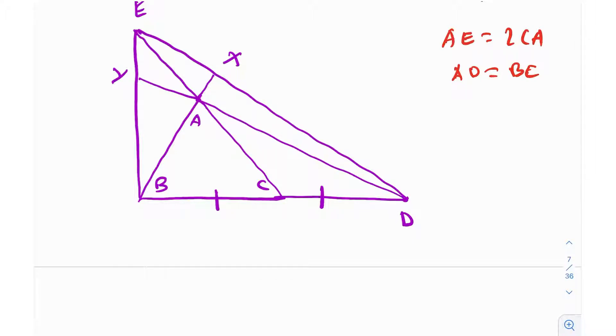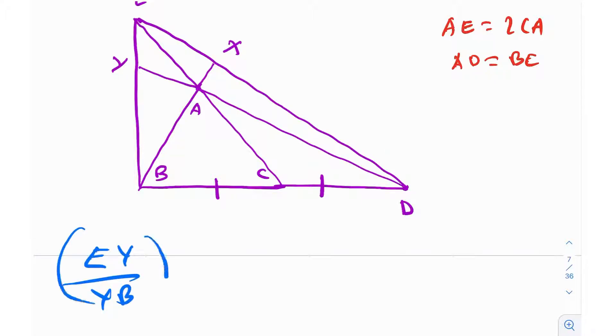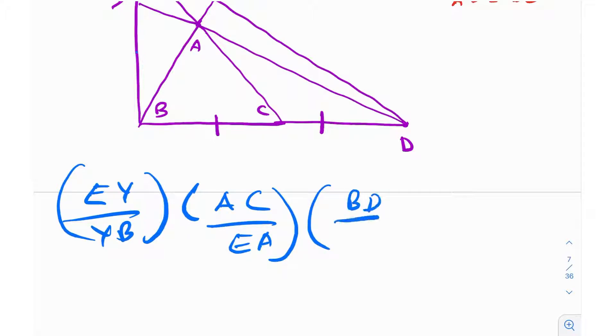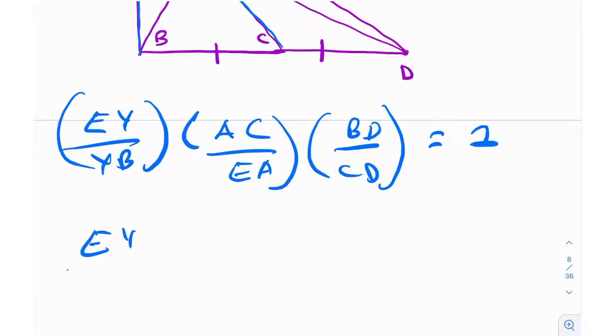Now we're going to try and use the Menelaus theorem. So basically EY by YB, EY by YB times AC divided by EA, EY by YB, into BD divided by CD is equal to 1. Did you see the application? This was CA: AC divided by EA times EY divided by YB times BD divided by CD is equal to 1. Great, so EY divided by YB, which is kind of what I intend to find over here, is equal to 1 times CD divided by BD times EA divided by AC.